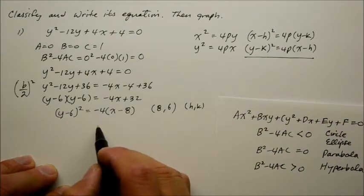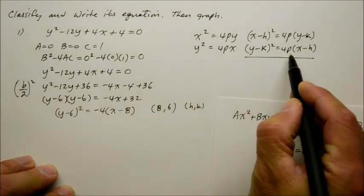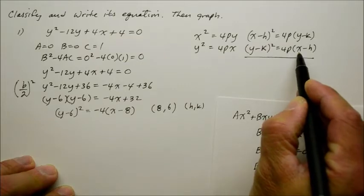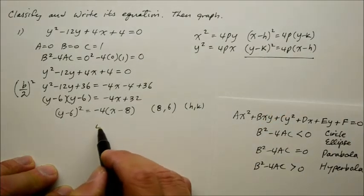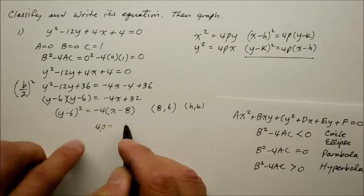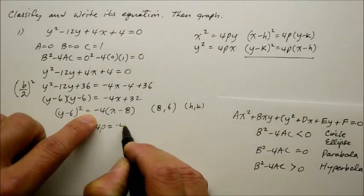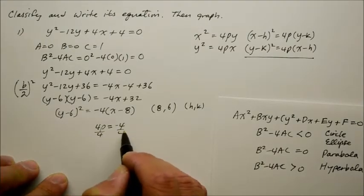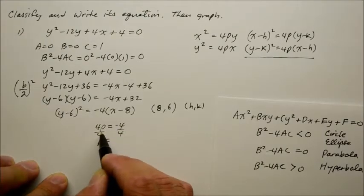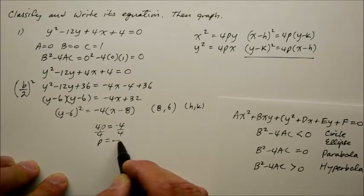Then what's the p? Well, p is the coefficient in front of the (x-h). In this case, 4p is identified as negative 4. So what on earth is just a p? Well, to solve for p, we divide the coefficient 4, so the p, the focus, actually is negative 1.